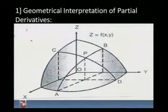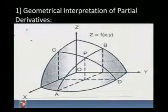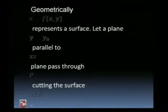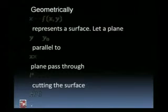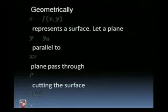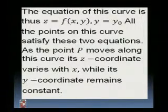Here we can see that the curve APB is parallel to the x-z plane, and the curve CPD is parallel to the y-z plane. Geometrically, z = f(x, y) represents a surface. Let a plane y = y₀, parallel to the x-z plane, pass through point P, cutting the surface at APB. The equation of this curve is z = f(x, y) and y = y₀.